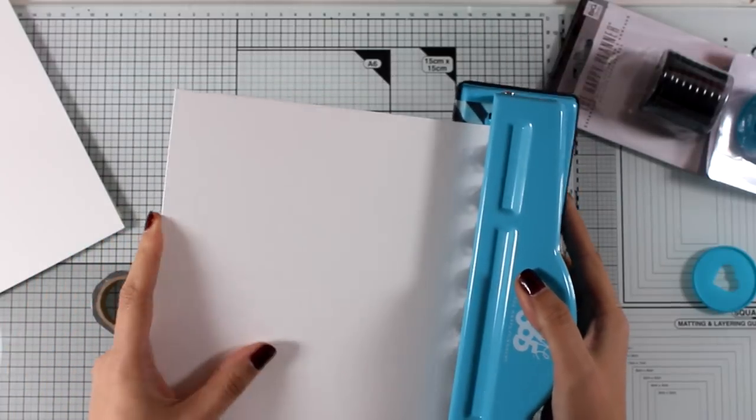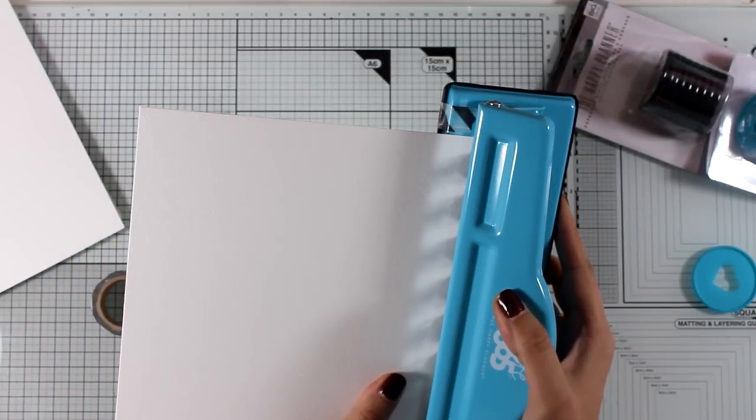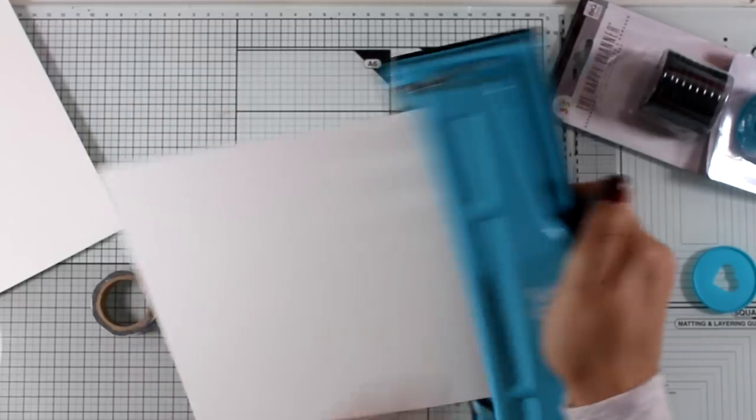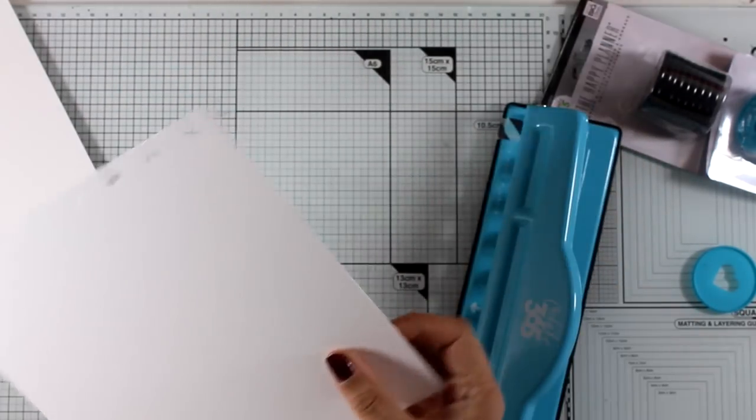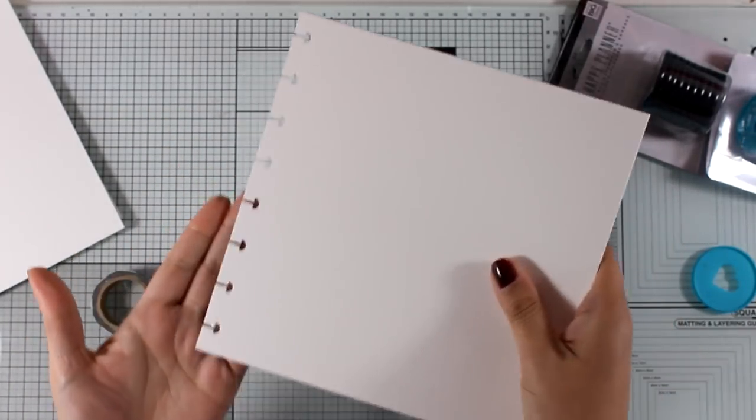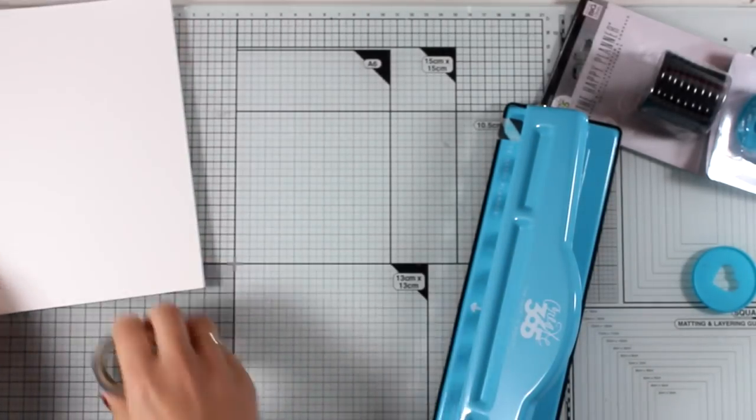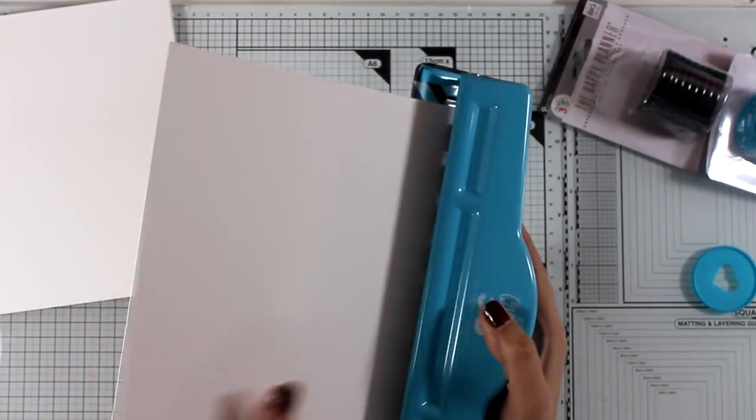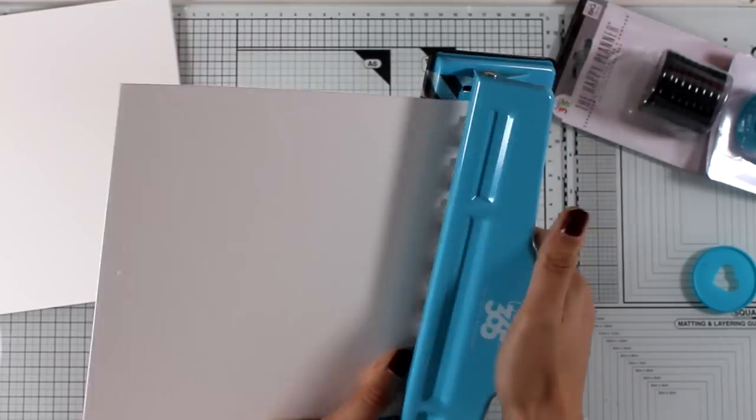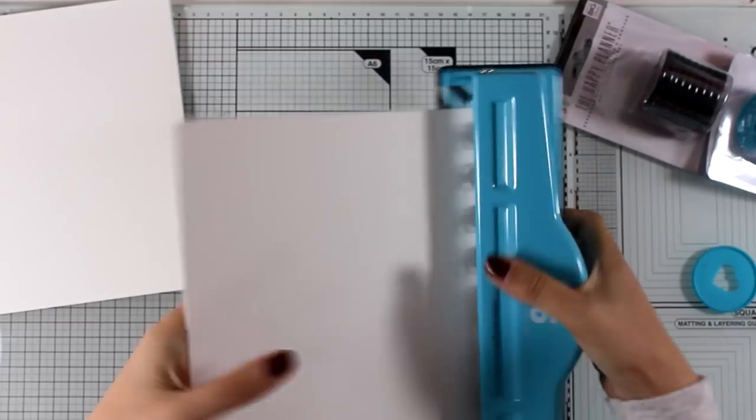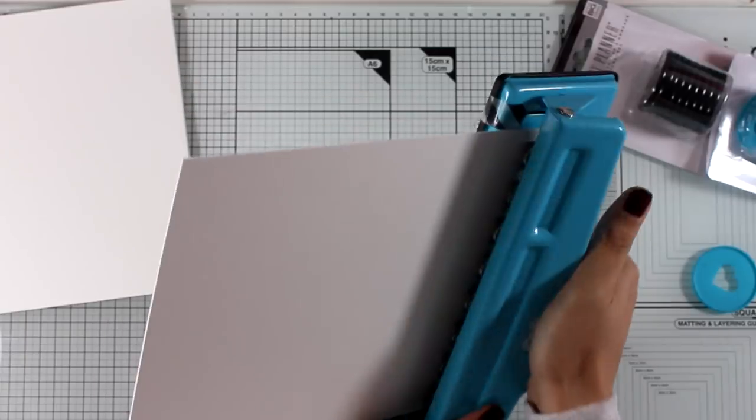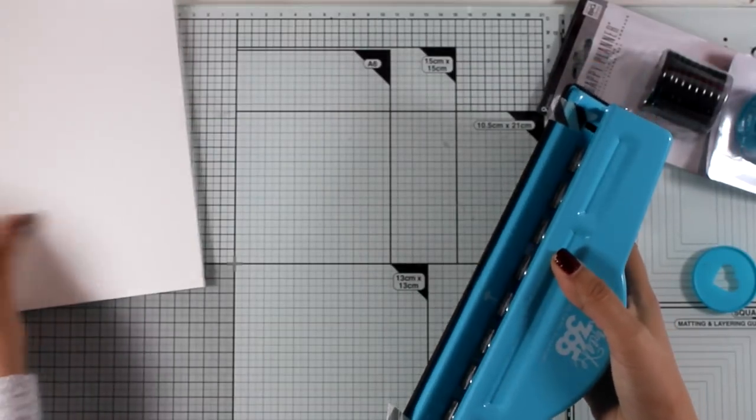This punch was designed to punch out thin paper for planners and it actually has a maximum of three papers at one time that you can punch. But as you can see, I have absolutely no problem punching those thick pages. These are 140 pounds, but of course I'm punching one at a time. So you see, you do have the ability of creating your own art journal and deciding what size you want to make them. You can buy the colors of the discs that you like and the size that you like.